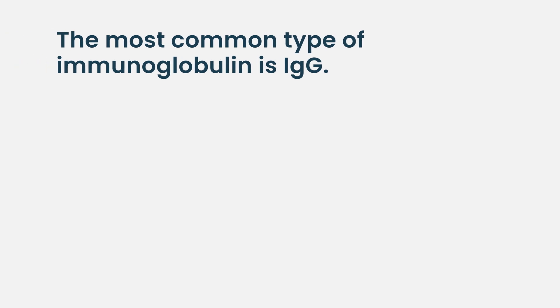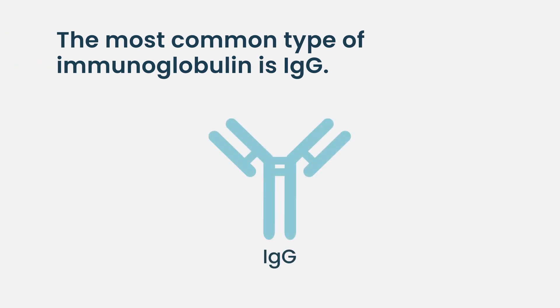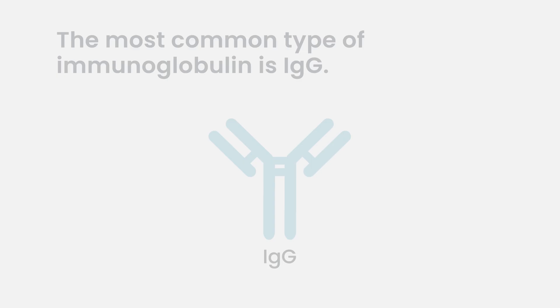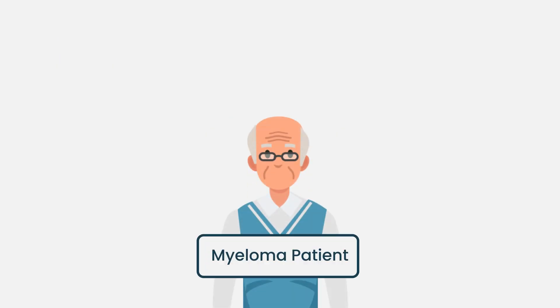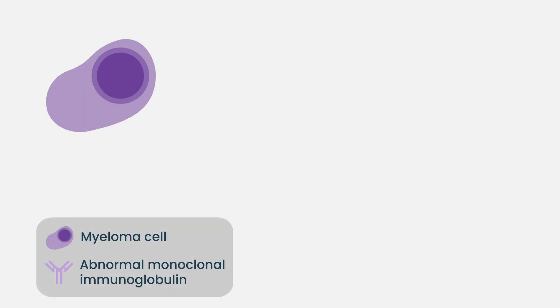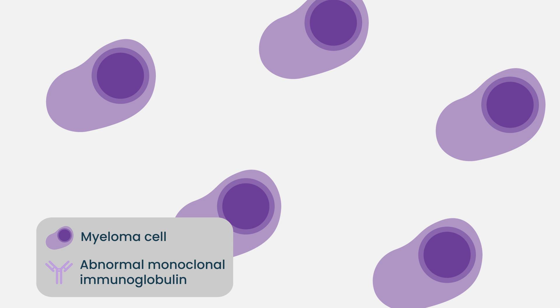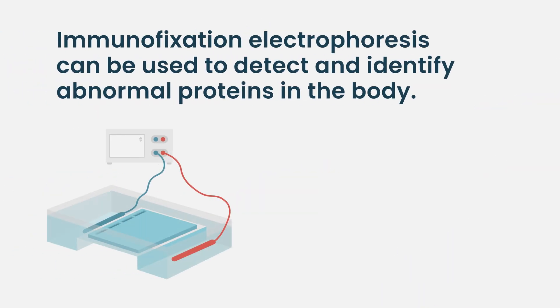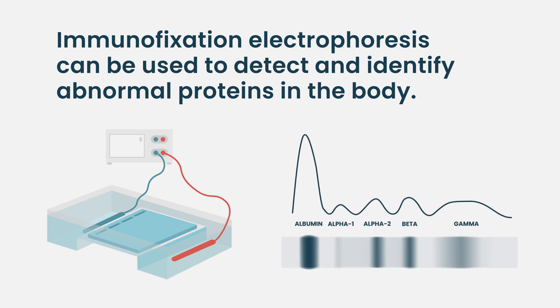The most common type of immunoglobulin is the IgG format, and that's the one that's frequently seen — but not always — in patients who have multiple myeloma as an abnormal monoclonal immunoglobulin. In myeloma, the plasma cells are all clones of each other and are all making exactly the same type of immunoglobulin. This can be distinguished from the normal polyclonal picture through lab tests such as electrophoresis and the immunofixation study. An immunoglobulin is also known as an antibody.